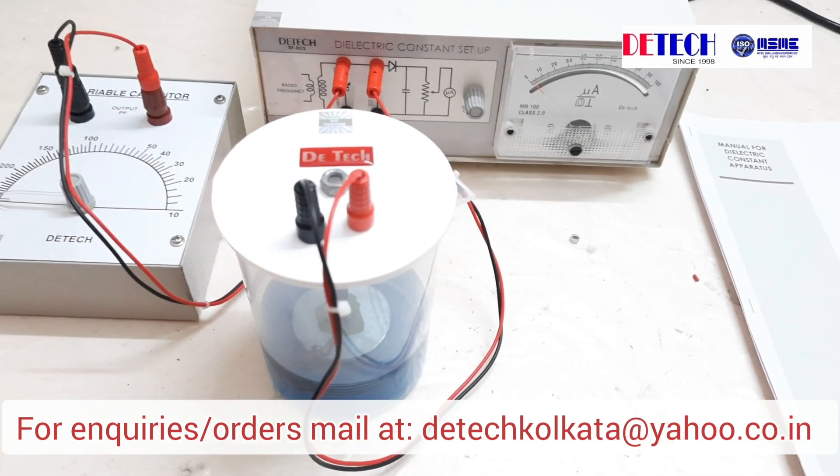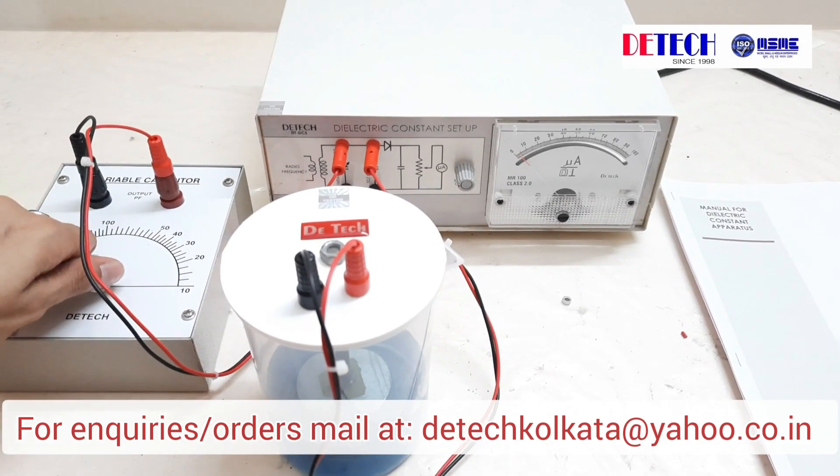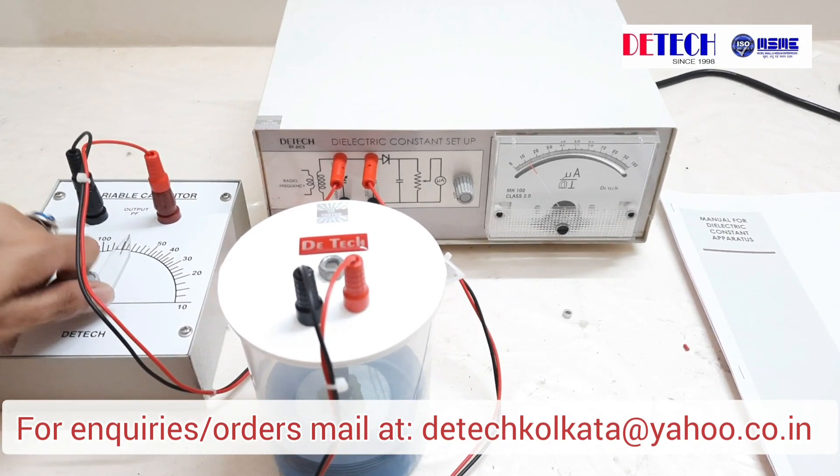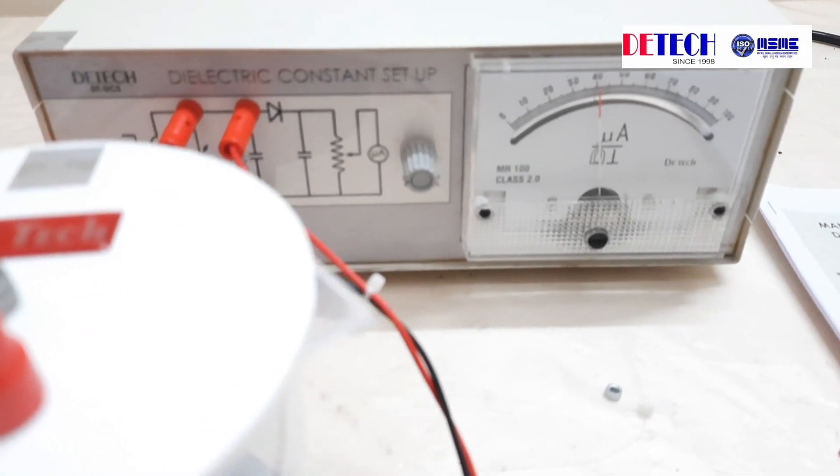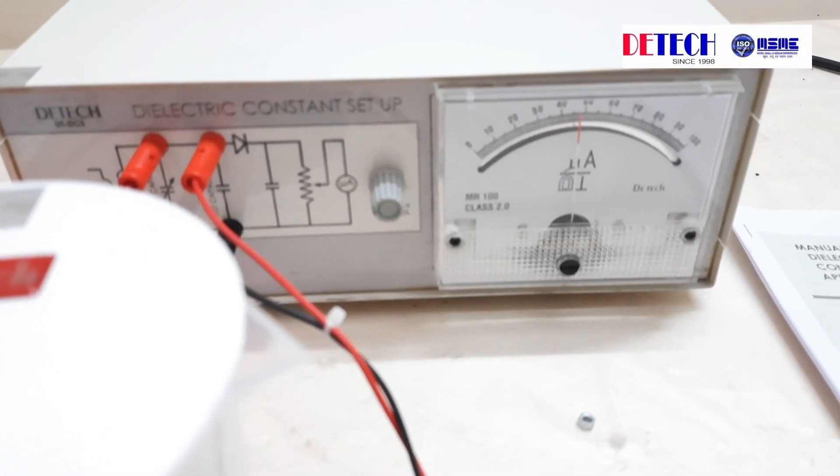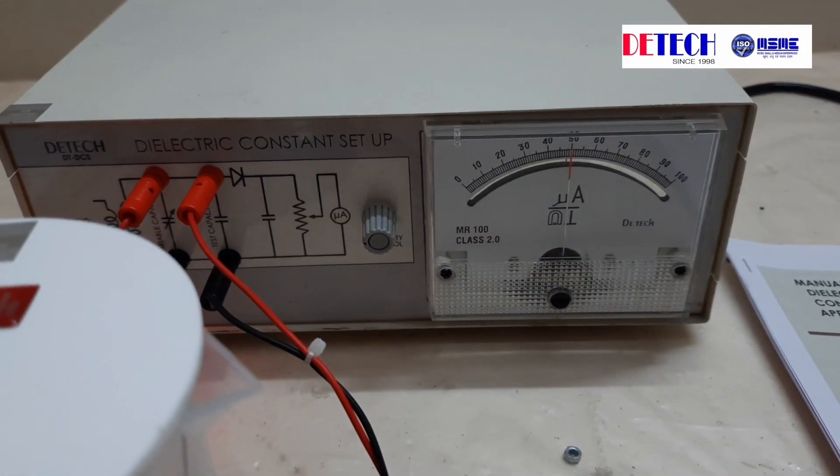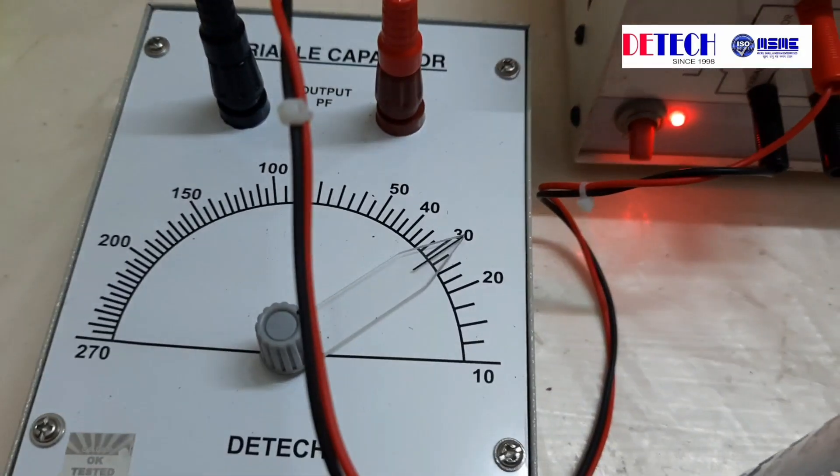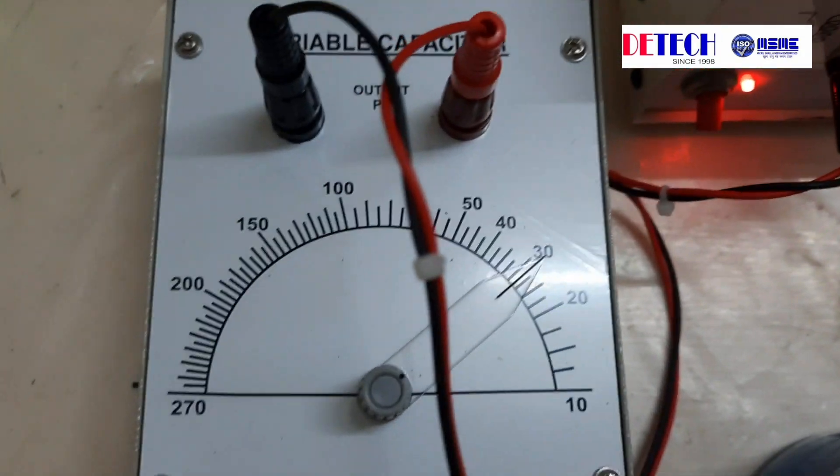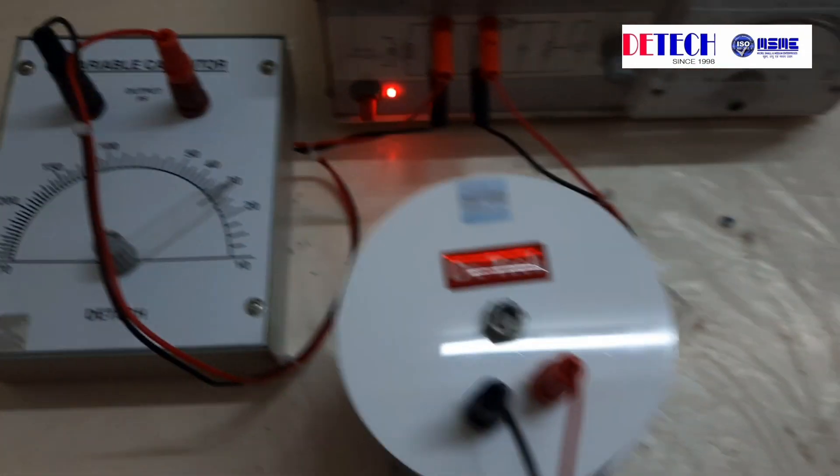So now we'll again vary the variable capacitor and note the capacitor for maximum current obtained in the micrometer. So this is the point where we are getting the maximum current and this corresponds to around 30 pf.